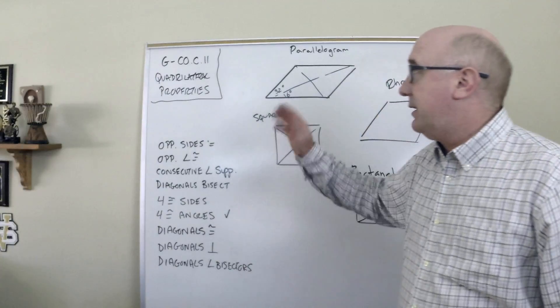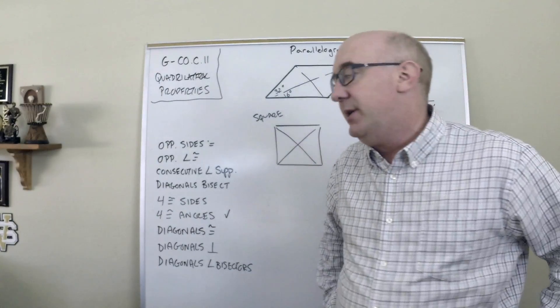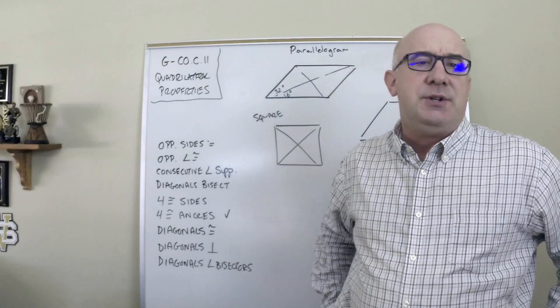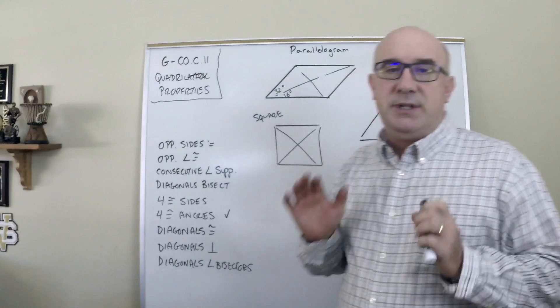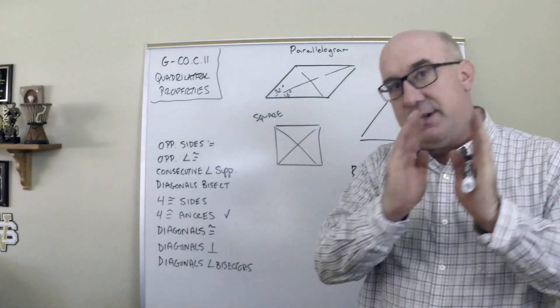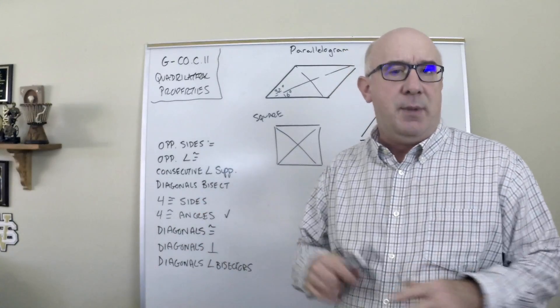Alright, let's take a look at GCO C11. This is worksheet two where we start to now use the properties. So at this stage you should know what properties a parallelogram has, what properties a rectangle has, and be able to distinguish them.